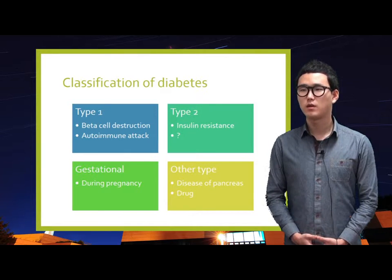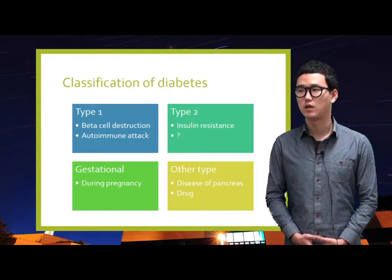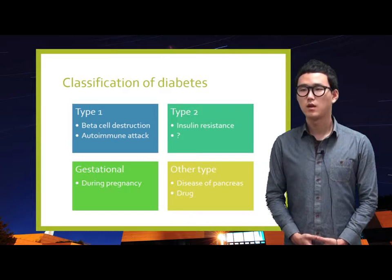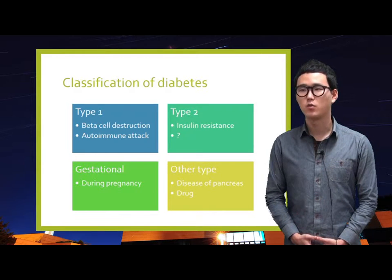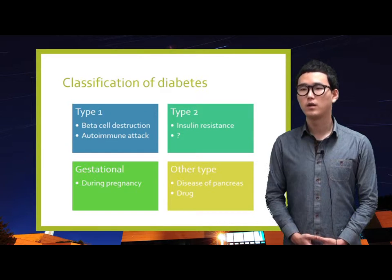Type 2 diabetes is caused by insulin resistance combined with relative insulin deficiency, and it is the most common form of diabetes. Gestational diabetes is diagnosed during pregnancy due to relatively inadequate insulin secretion and responsiveness. Other specific types of diabetes are caused by other factors, for example, disease of the exocrine pancreas.